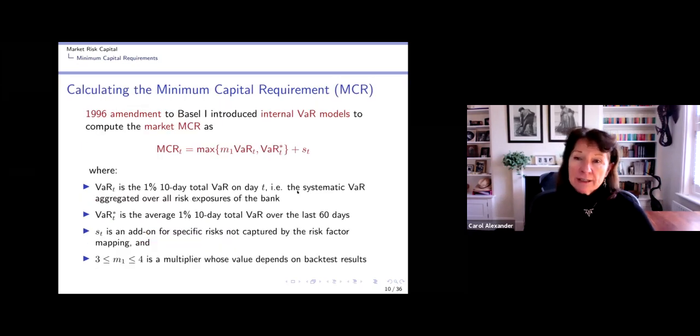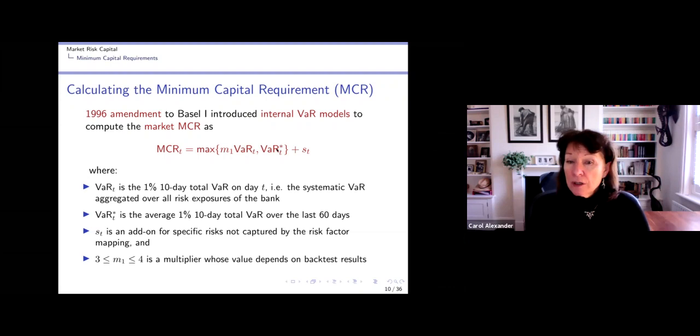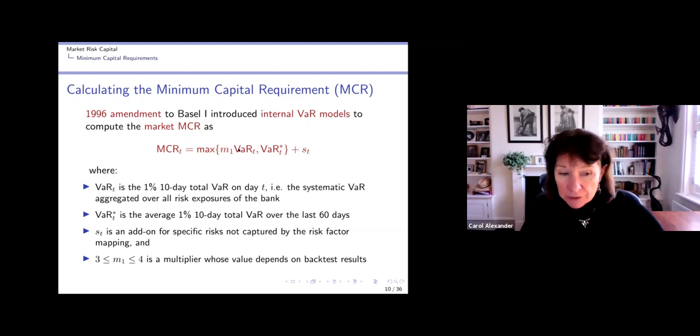So how do we calculate this MCR? Well, the 1996 amendment to Basel I introduced internal VaR models to compute the market minimum capital, but it was only for the market risk in 1996. And the rule for the minimum capital requirement for market risk is that it's going to be the maximum of two things. It's either a multiplier of today's value at risk or it's this value at risk star plus an add-on, ST.